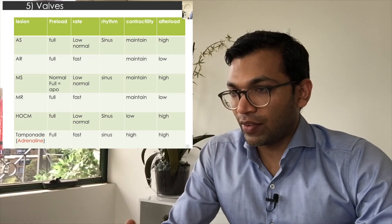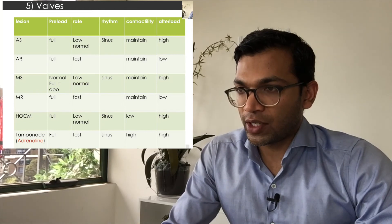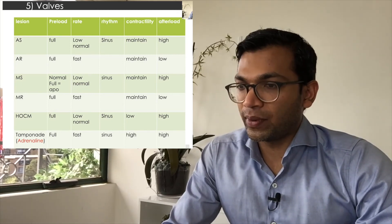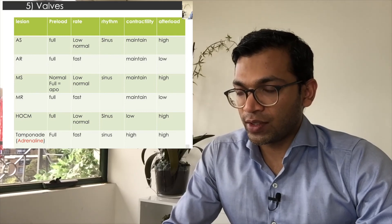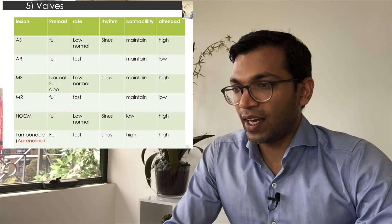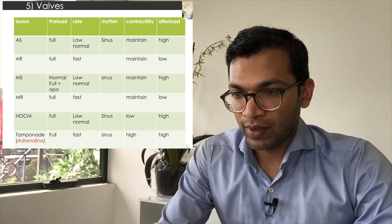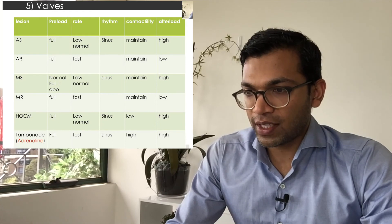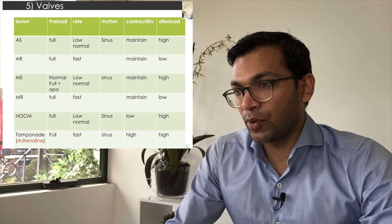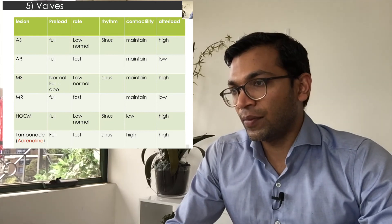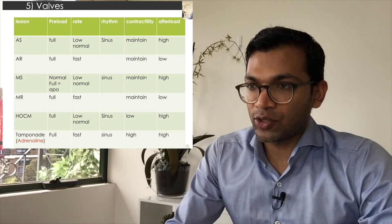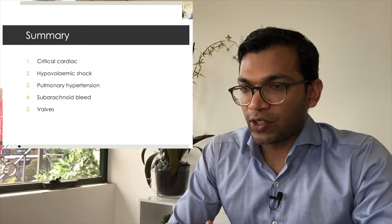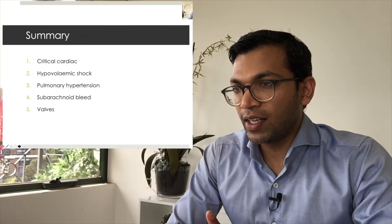HOCM is similar to aortic stenosis but low contractility is preferred to reduce dynamic LVOT obstruction from the hypertrophied musculature. So: full preload, low-normal heart rate to maintain diastolic perfusion time, sinus rhythm ideal, low contractility, and high afterload to perfuse the thick myocardium. For tamponade, think adrenaline — everything adrenaline does is what you want: full preload, fast rate, high contractility, high afterload, with sinus rhythm being ideal.